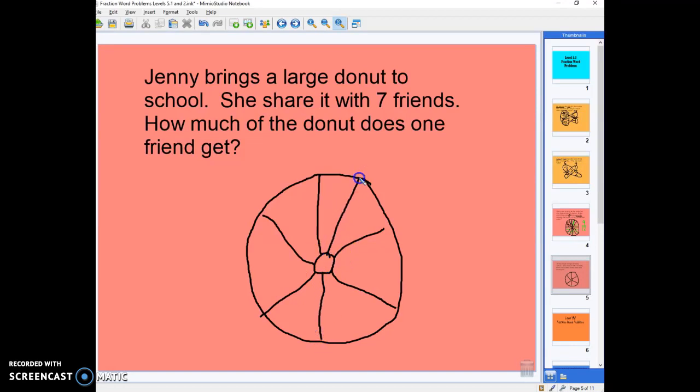That's six pieces, so let's divide that one. Another one. So, we've got one, two, three, four, five, six, seven. So, if one friend, she gave each piece to seven friends, one friend gets this much. They get one piece of the seven-piece donut. So, I've got my fraction right there. One piece is shaded for one friend, and I've got seven pieces total. So, one friend gets one-seventh of the donut.